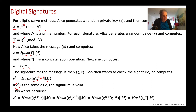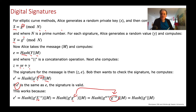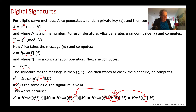The verification works because when we combine G^Z with G^(-SE), since Z = SE + Y, we get G^(SE + Y - SE) = G^Y, which is exactly the value Alice originally computed. Because we multiply logs together by adding exponents, SE + Y minus SE results in G to the power of Y, matching Alice's original value.